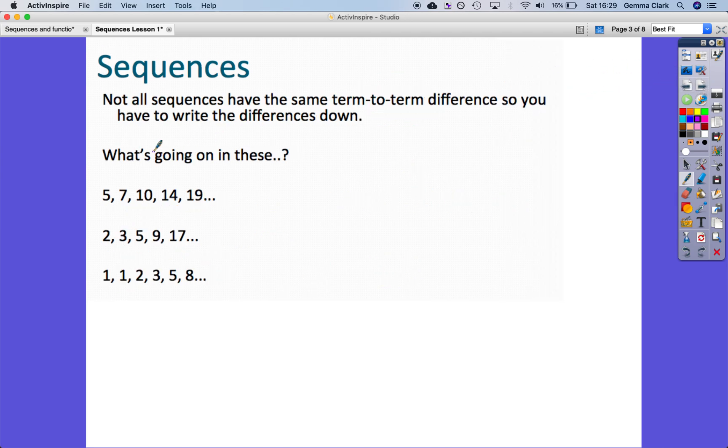Not all sequences have the same term to term difference, so you have to write the differences down. Usually when you get a sequence the first thing to always look at is the difference between the terms, and sometimes patterns will jump out. So in this one we've got difference of 2, 3, 4, and 5. Follow the pattern, what would come next? Of course it would be 2 plus 6, so what would be the next term in the sequence? 19 plus 6 is 25.